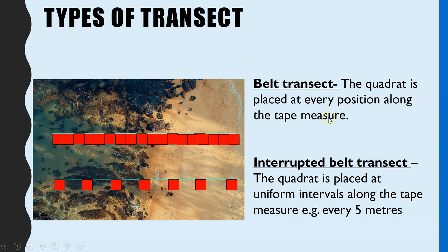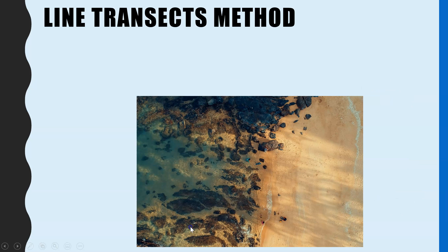There are two types of transects. A belt transect is uninterrupted — you place your quadrat at every position along the tape measure. An interrupted belt transect is where you place the quadrat at intervals. You would most often use an interrupted belt transect if you are measuring a very long distance to save time, or if placing the quadrat at every single position wouldn't show much difference — so you might place it every two or five meters.